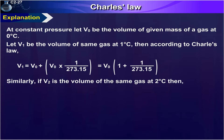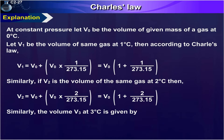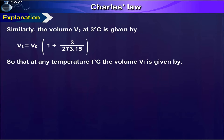Similarly, if V₂ is the volume of the same gas at 2 degrees Celsius, then V₂ = V₀ + V₀ × (2/273.15) = V₀ × (1 + 2/273.15). Similarly, the volume V₃ at 3 degrees Celsius is given by V₃ = V₀ × (1 + 3/273.15). So that at any temperature T degrees Celsius, the volume Vₜ is given by Vₜ = V₀ × (1 + T/273.15).